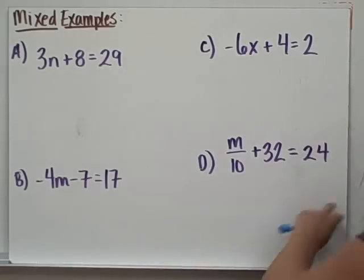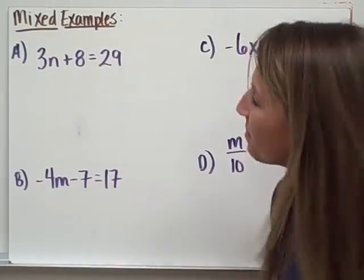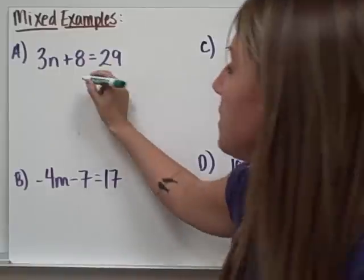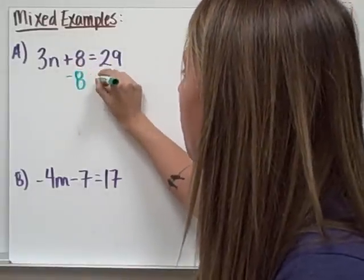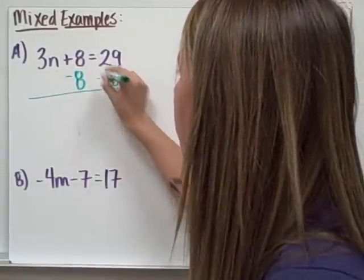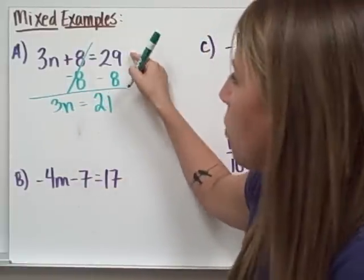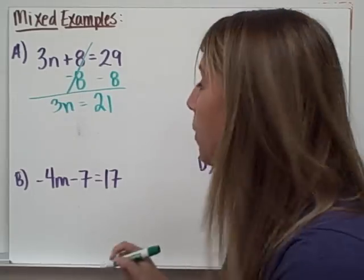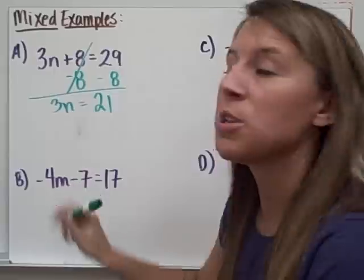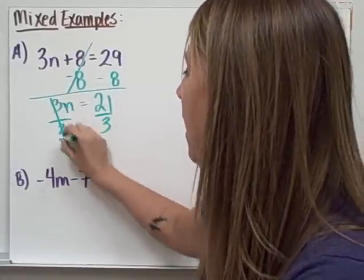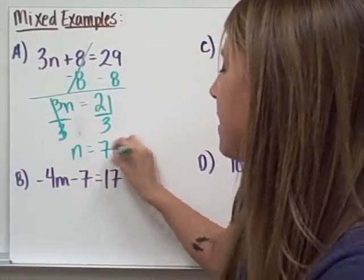So here are just a few examples that we're going to work through together. 3n plus 8 equals 29. First I'm going to subtract 8 from both sides. 3n now equals 21 because 29 minus 8 is 21. The opposite of multiplication is division, so I divide by 3 on both sides and n equals 7.